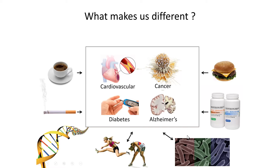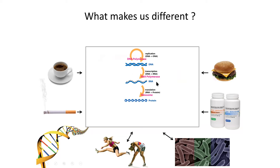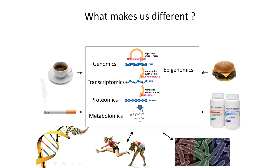All these factors play together and define, in the end, our risk to develop different complex disorders — cardiovascular disease, cancers, Alzheimer's risk, diabetes, and so on. What makes us different with respect to these disease risks is inscribed in our genes and how we interact with the environment. We have many technologies to study this: genomics, transcriptomics, proteomics, metabolomics, epigenomics, microRNAs, and protein modification. All these omics technologies are very useful to study complex disorders.